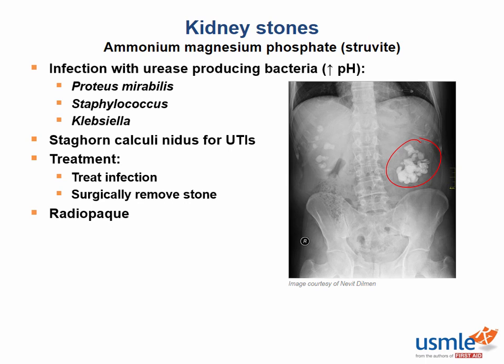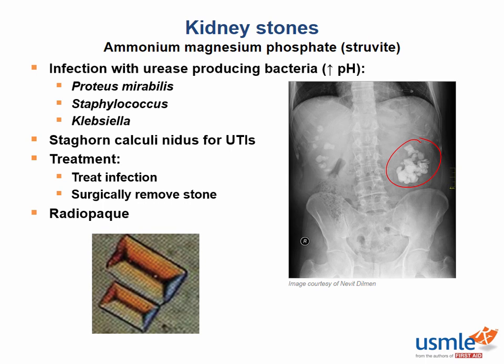Under the microscope, these kinds of stones often look like the top of a coffin lid. You can remember their association with ammonium magnesium because you can trace out a capital M in the lid of a coffin.